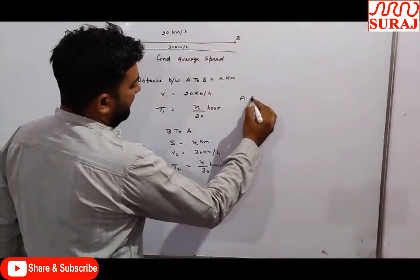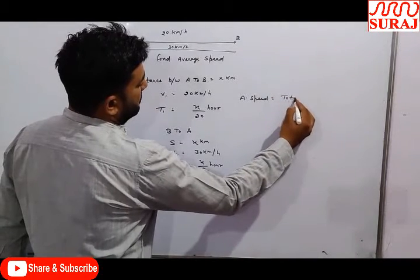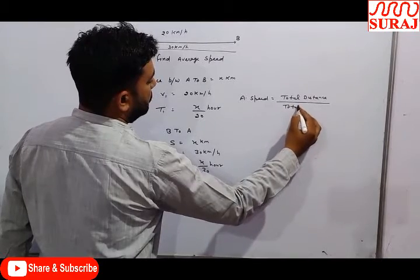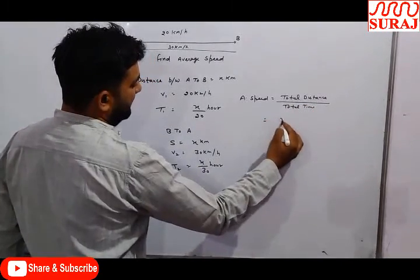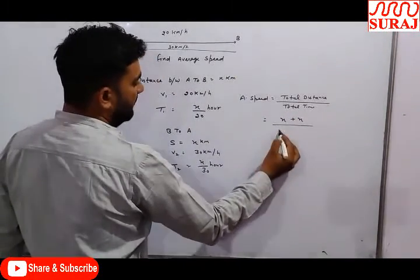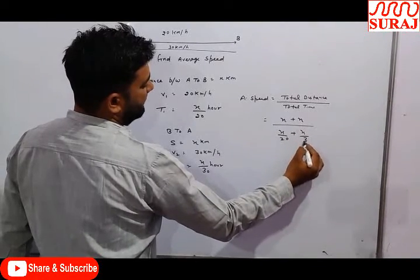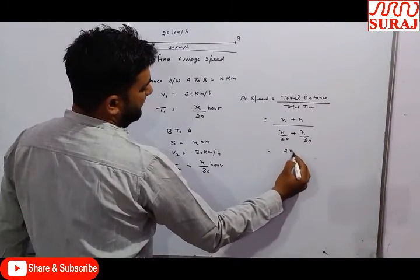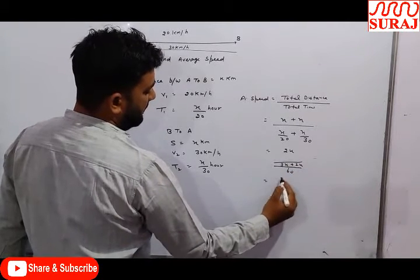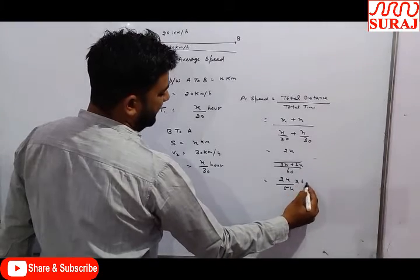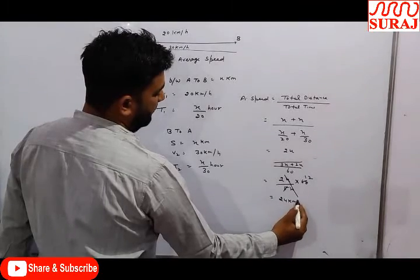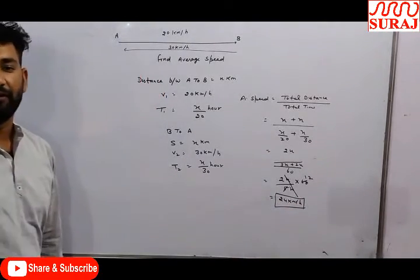Average speed equals total distance divided by total time. Total distance is x plus x equals 2x. Total time is x/20 plus x/30, which gives 3x plus 2x over 60, that is 5x over 60. So average speed equals 2x divided by 5x/60, the x cancels, giving 24 km per hour. That is the average speed of the body.